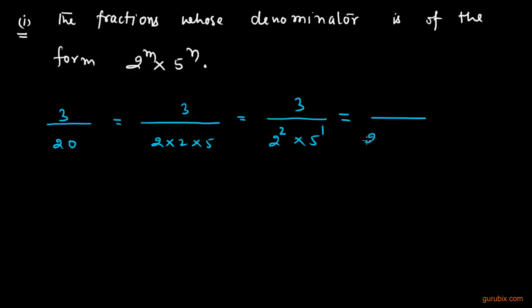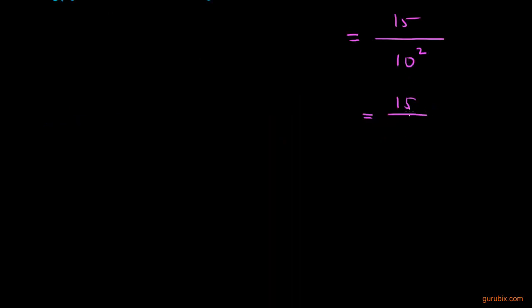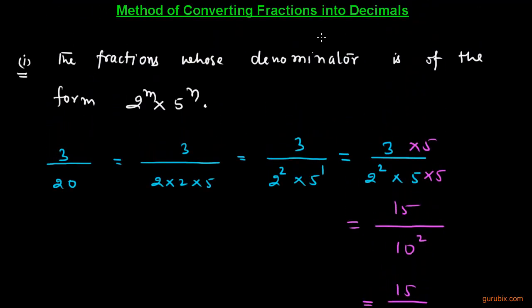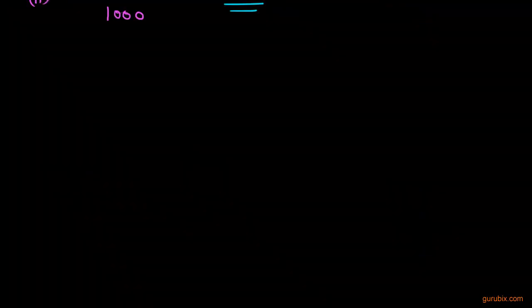To find it, we shall multiply both the numerator and denominator by 5 so that the denominator can be written as a power of 10. So we have 10 squared in the denominator and 15 in the numerator, and the denominator equals 100. Therefore the decimal expansion is 0.15. This is one method to change fractions into decimals. Now we shall move to the second type.